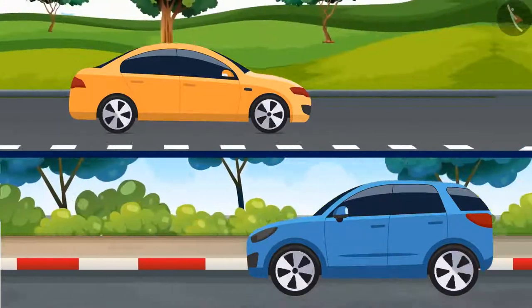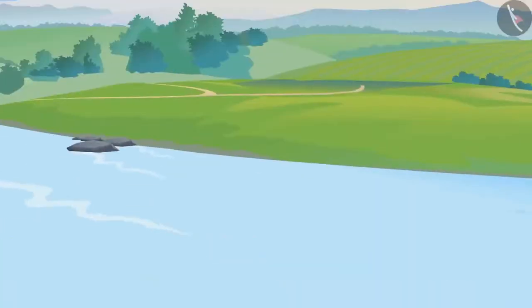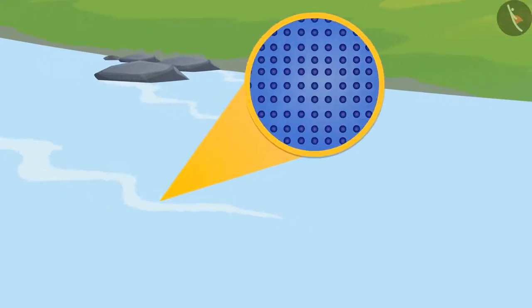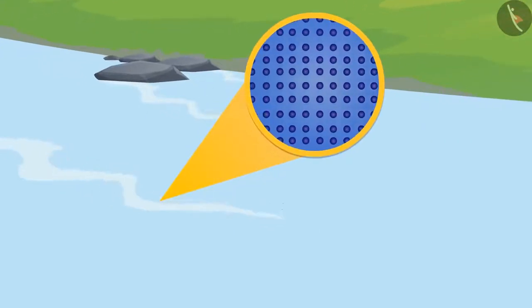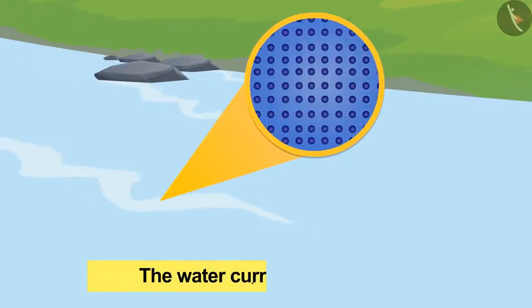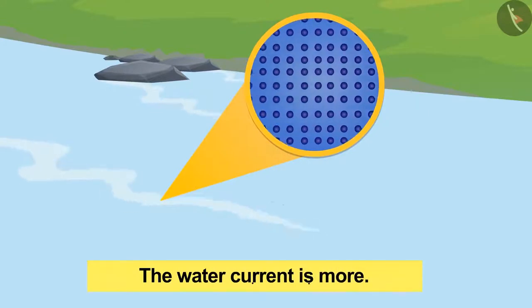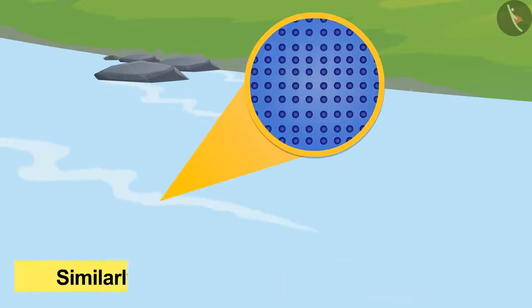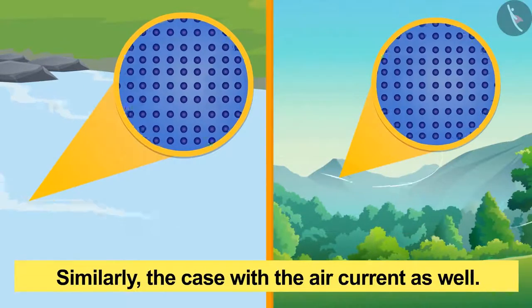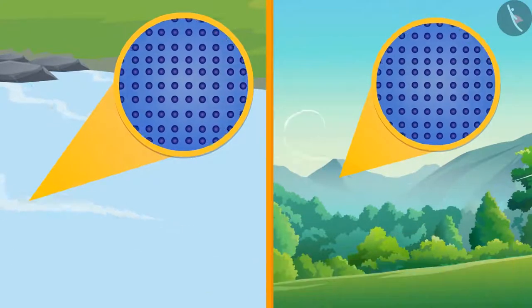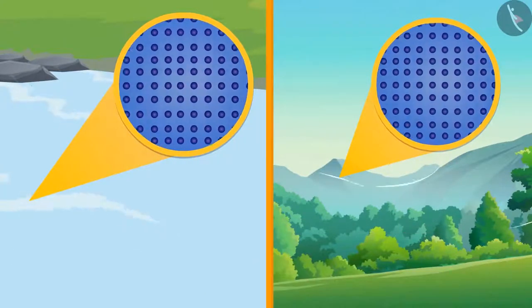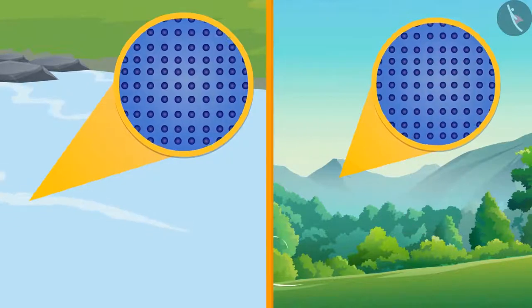We can see the flow of water in the river in the same way and say that the water current is strong. Similarly the case with air current as well. So it would be fair to say that current is a physical quantity which shows a relation of different parameters with time.